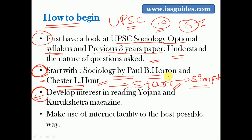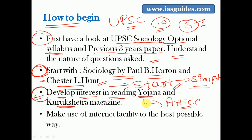After reading the Paul Horton book, you have to develop an interest in reading Yojana and Kurukshetra magazines. Yojana magazine writes about various important articles of national importance - it is a very comprehensive resource. You have to study the complete previous one year of Yojana magazine. Kurukshetra magazine is very important from a sociology point of view as it covers developmental works. Cultivate a habit of reading both magazines on a daily basis.